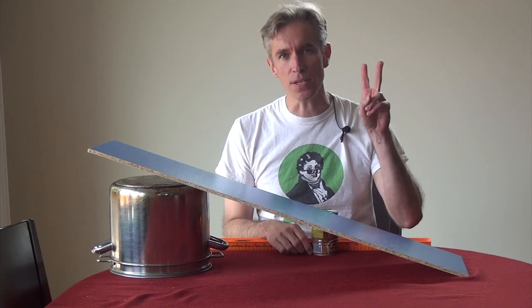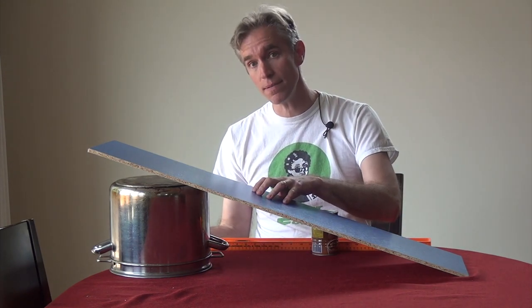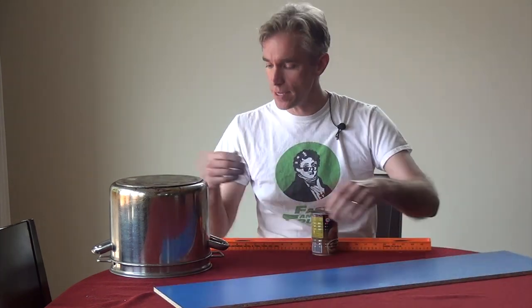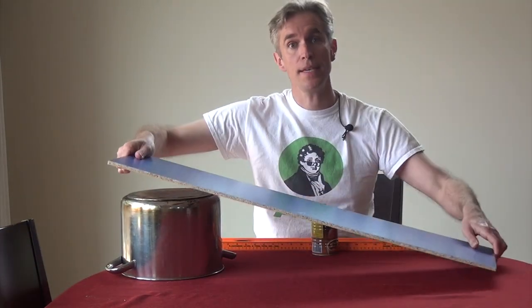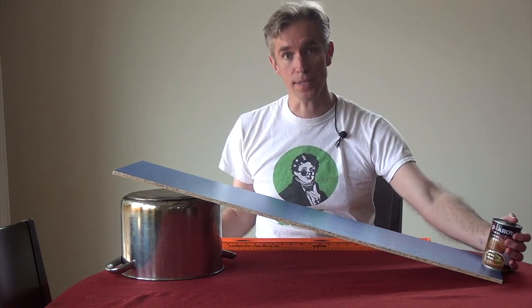The final thing is that we're going to be making two measurements, so you're going to want to make sure that you have something to set the ramp up on that you can change the height of. Here I'm using a pot with a liner, and so what that's going to allow me to do is set this up and have it sit at a different angle and measure a different acceleration.